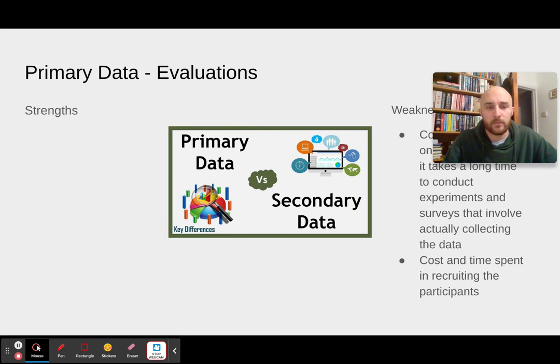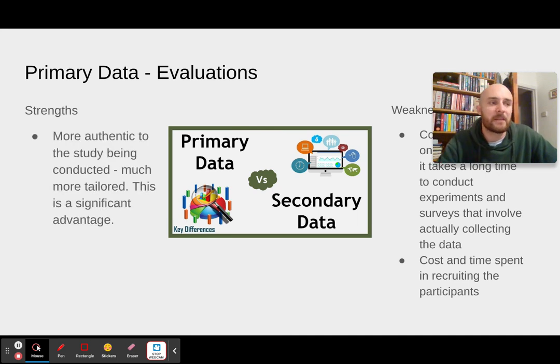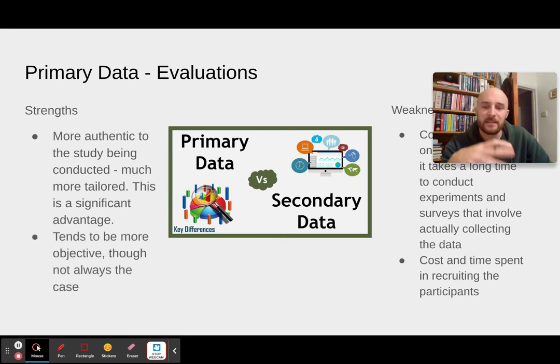In terms of strengths and weaknesses of primary data, let's begin. So if we're looking at the strengths, the major benefit to primary data is that it's more tailored to what it is you're actually studying. So if you're creating a piece of research from the ground up, the primary data you get, or the research method or the data collection method you use, is going to be really connected to what the study that you're doing. That term there is really key, authentic and tailored. The way you collect your data if you're doing it primarily through primary data is going to be really tailored to what it is you're actually collecting. It tends to be more objective, though that's not always the case.